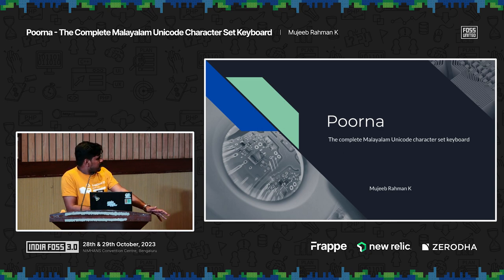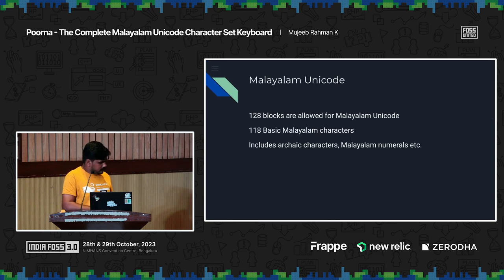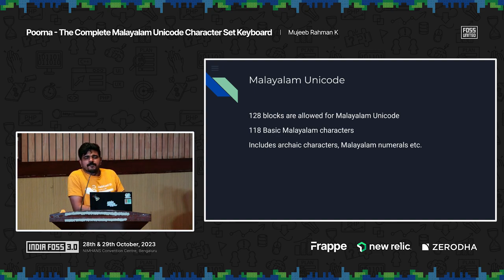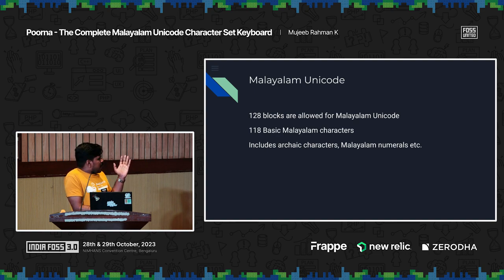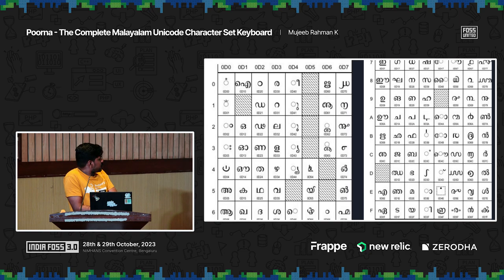What do you mean by complete? You all know about Unicode. In Unicode, there are 128 blocks that are allowed for Malayalam characters, in which 118 basic Malayalam characters are there, which includes archive characters, Malayalam numerals, etc. This is the Malayalam Unicode chart.